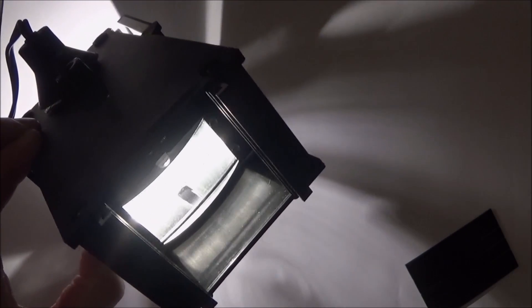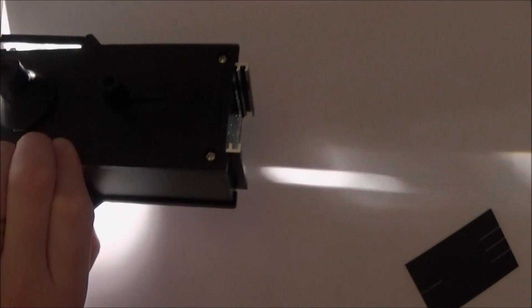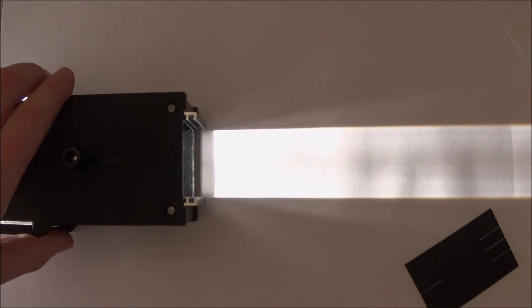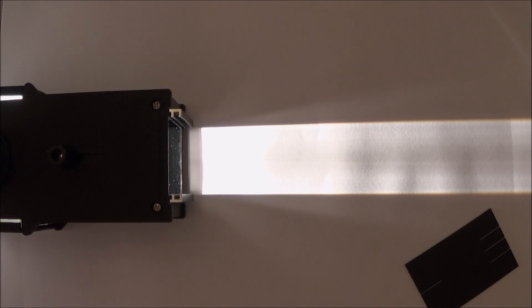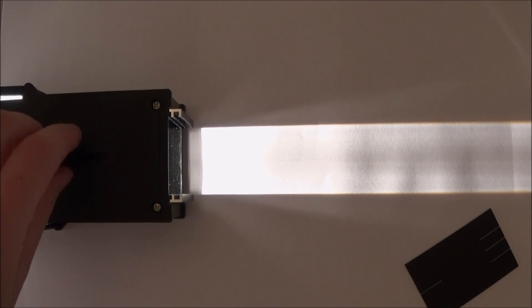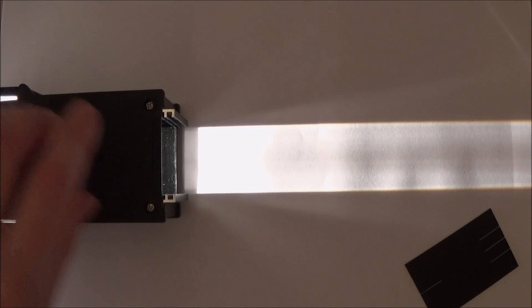This rather space-age looking device is the kind of thing that actually maybe the teachers may have hidden from you. So what we have here is a rather nice quality ray box. What it is is just a big lamp in the back, we have a lens which helps focus the light.